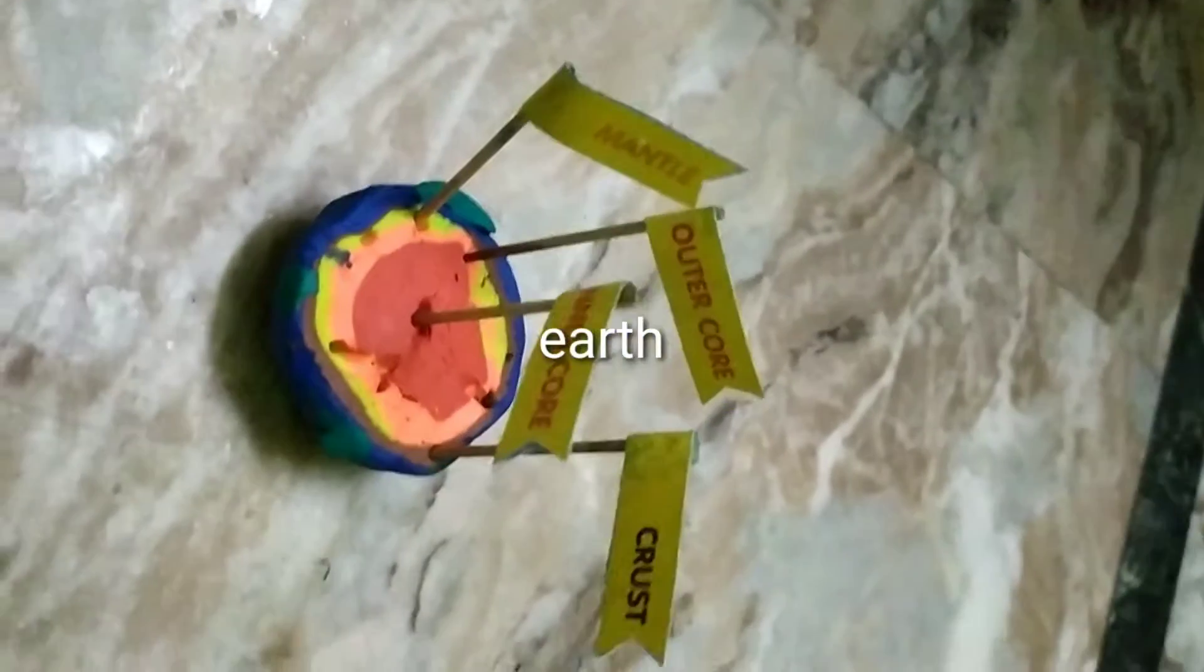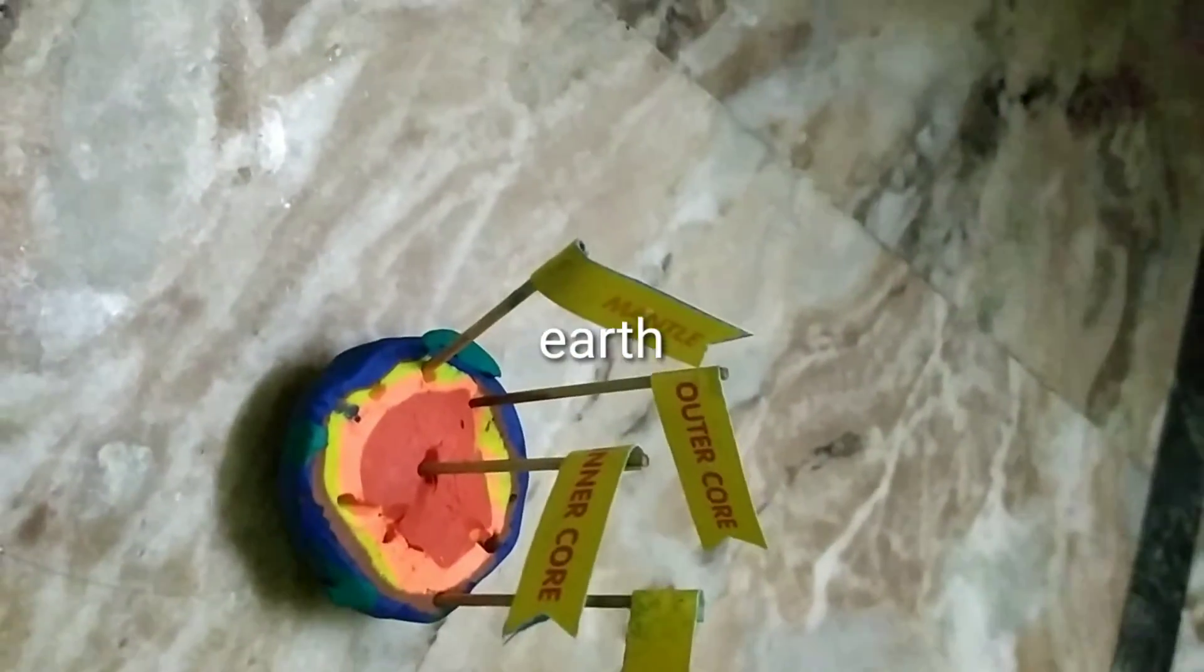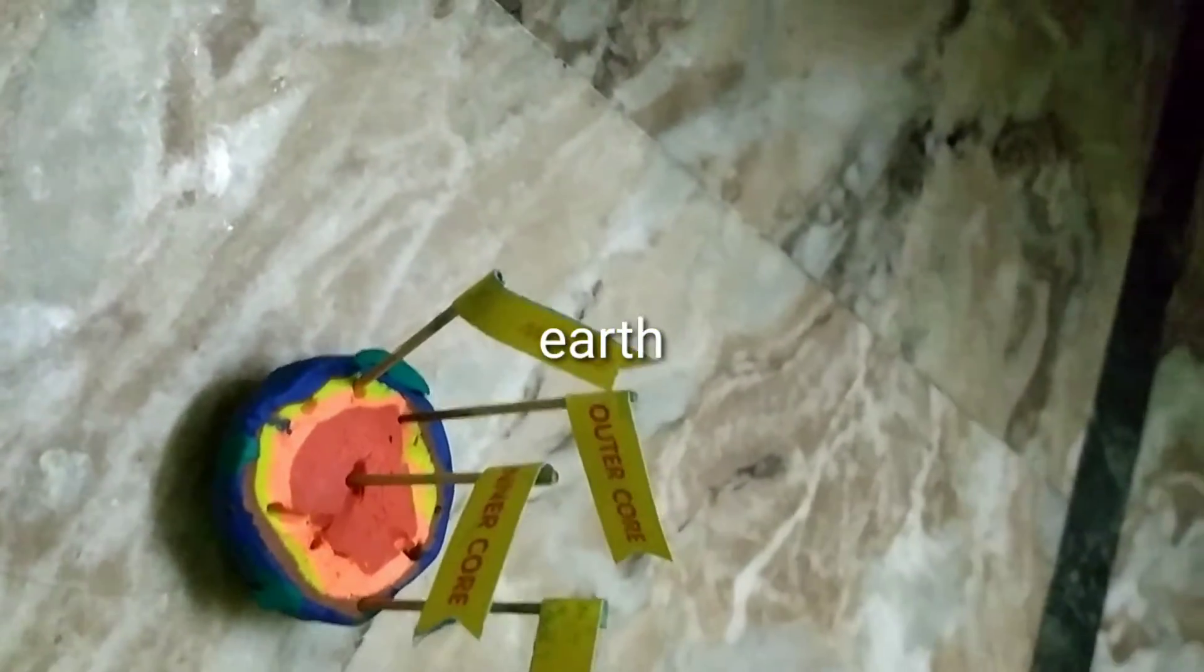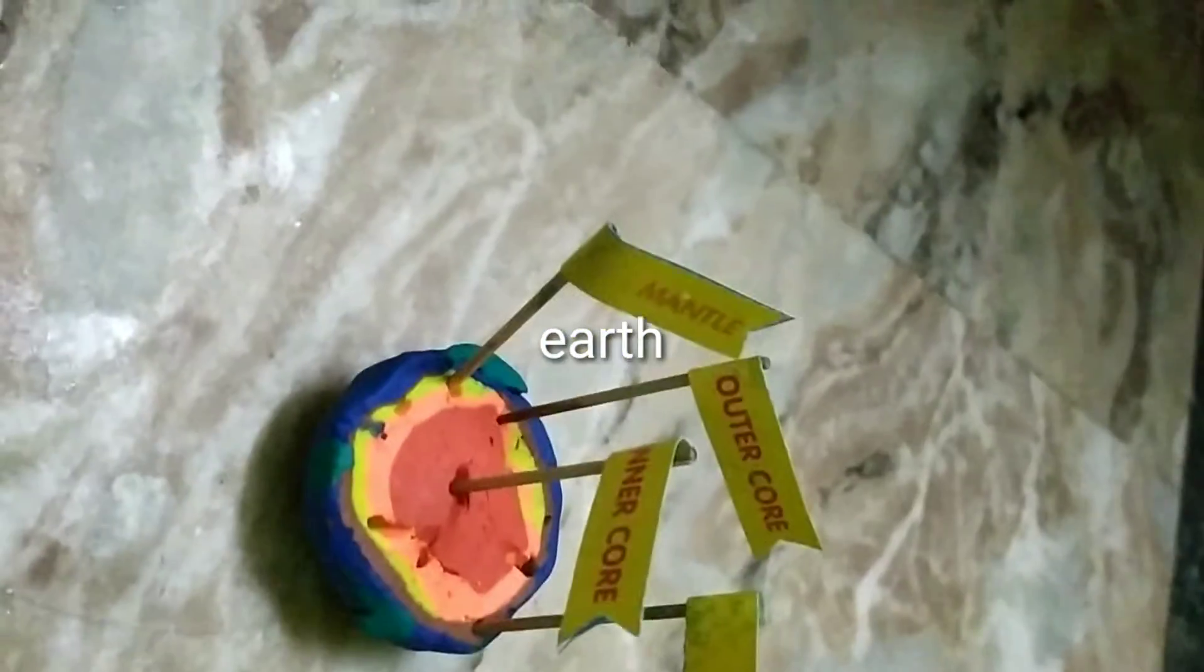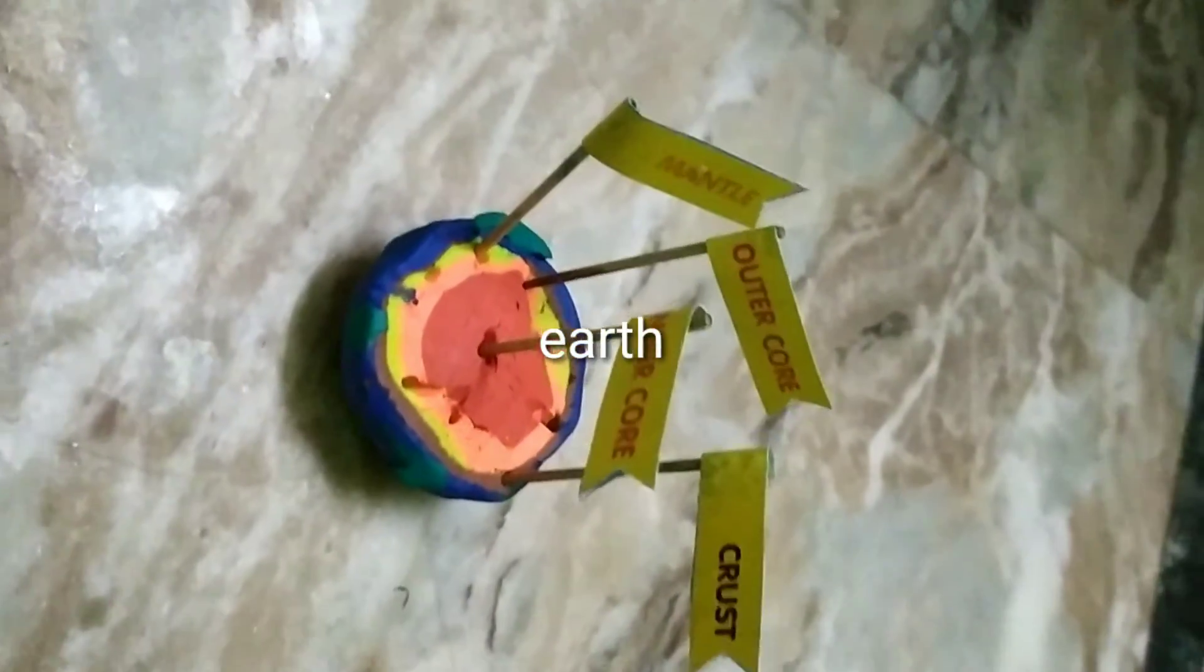So there are four main layers in the Earth. They help us grow. They protect the Earth from all the harmful rays.